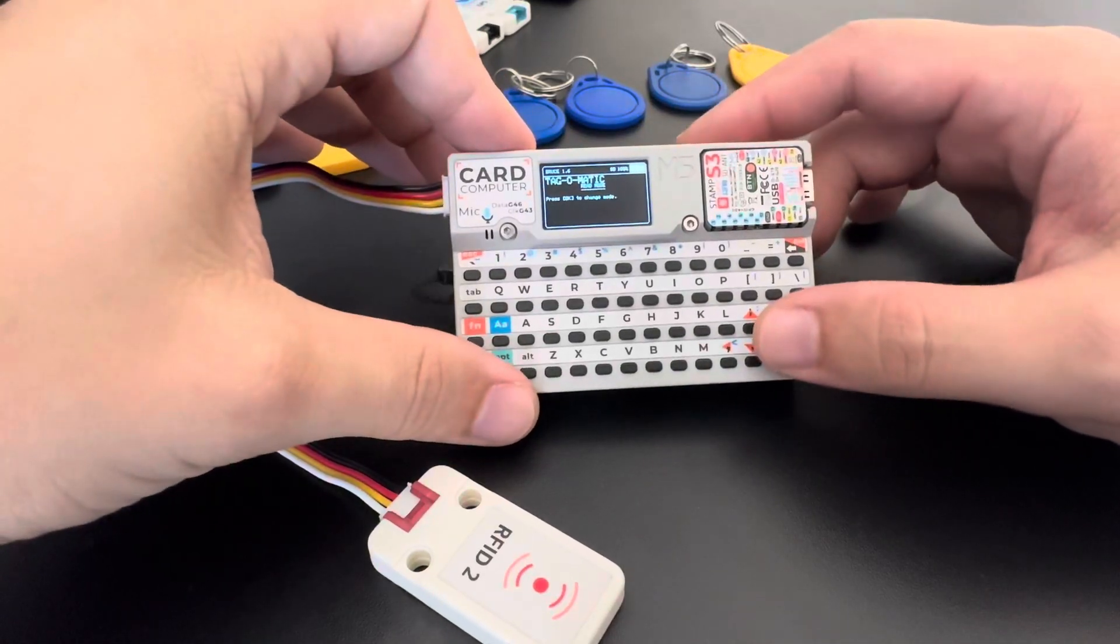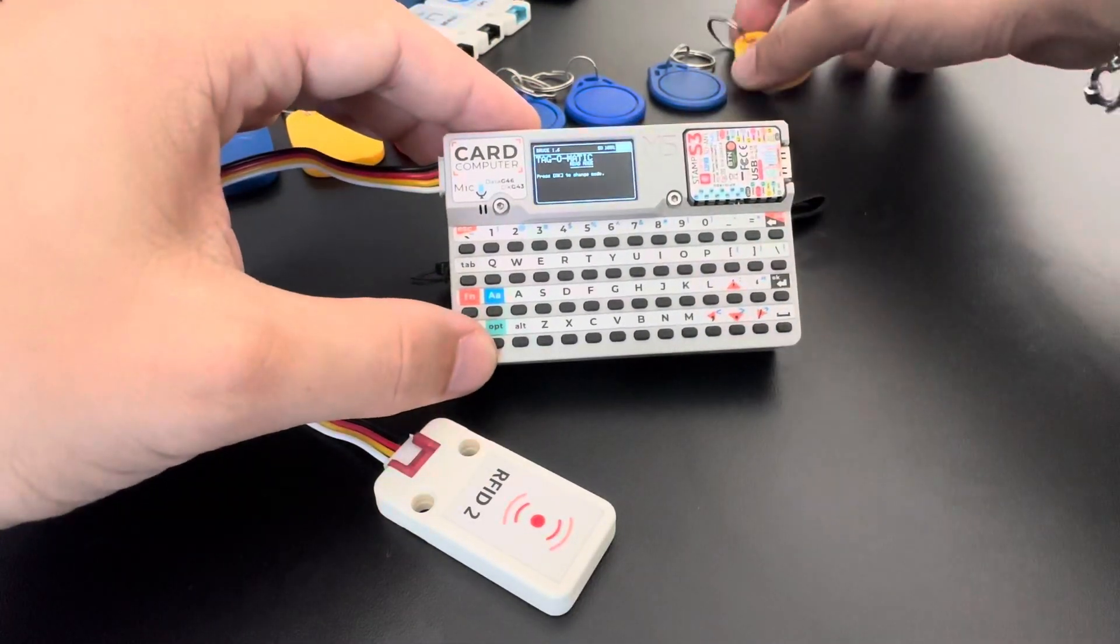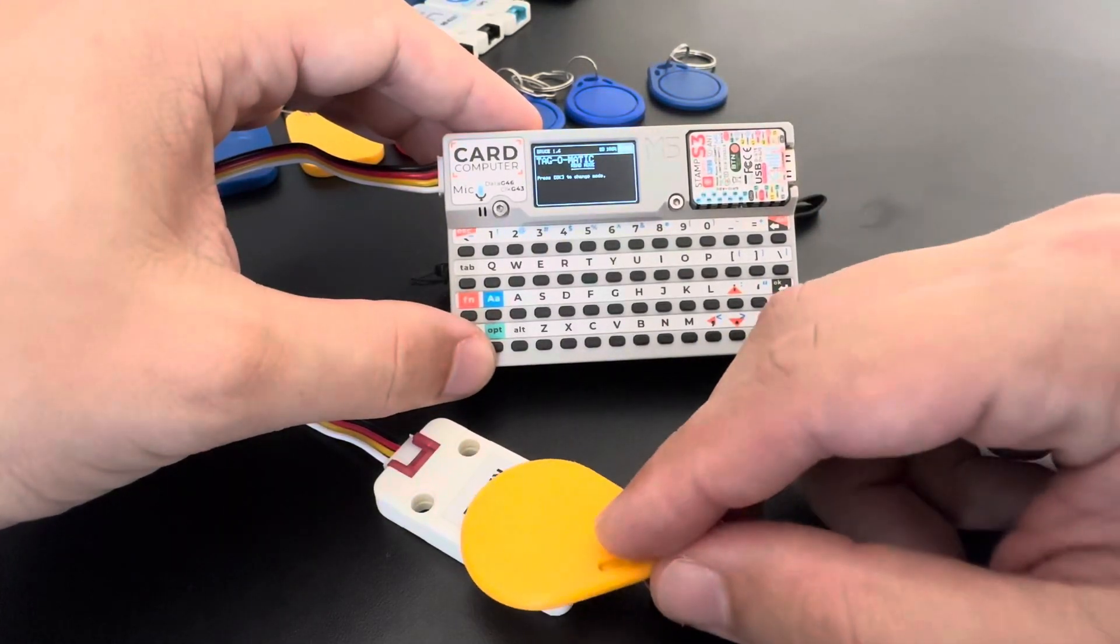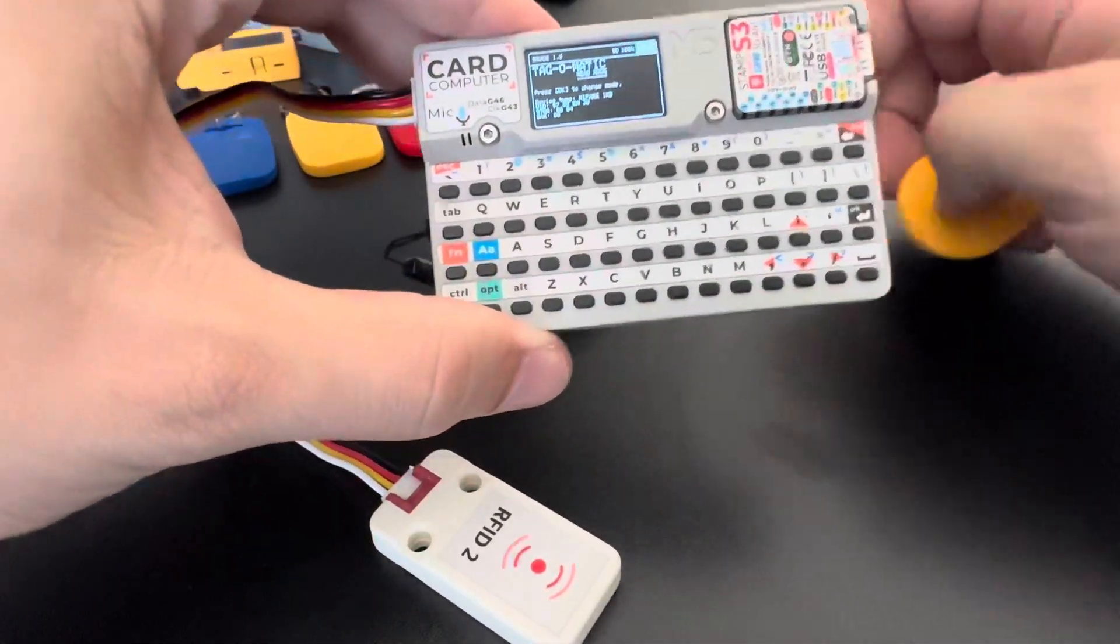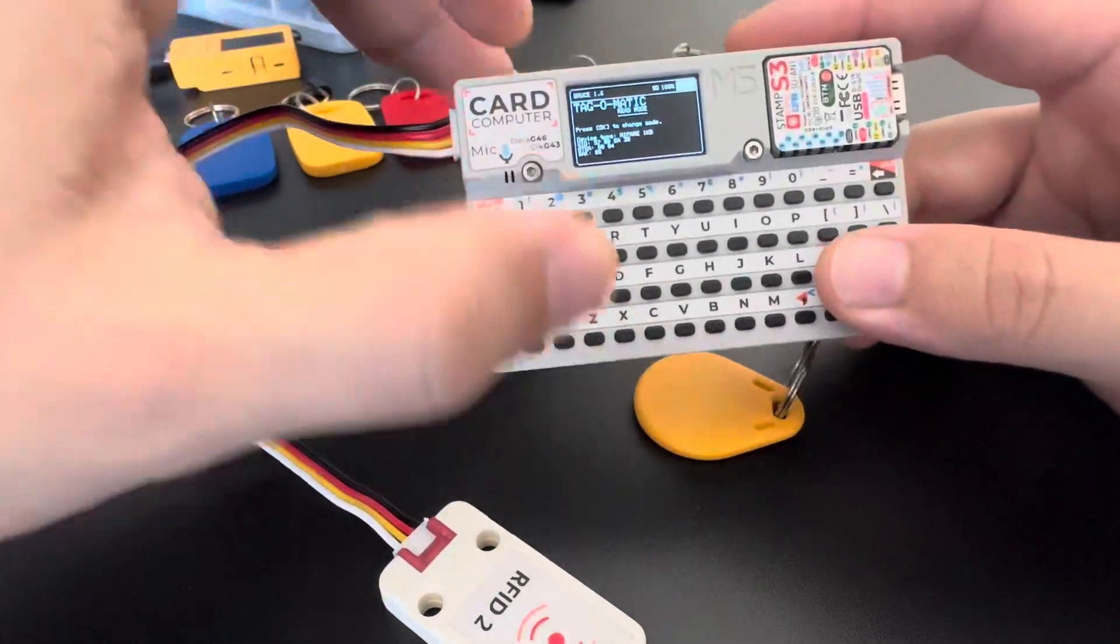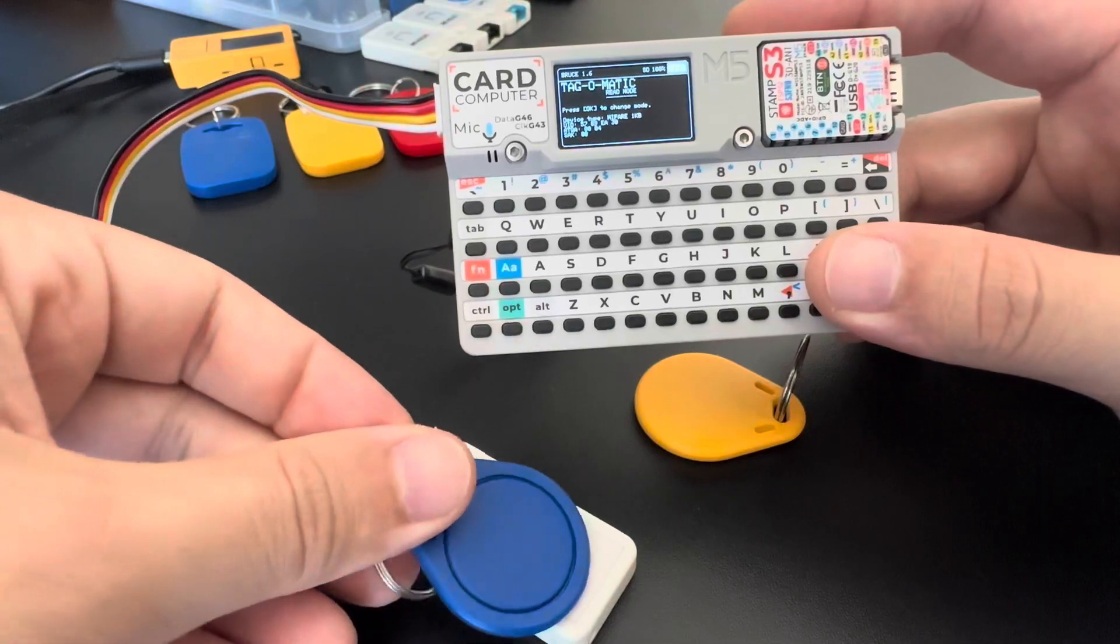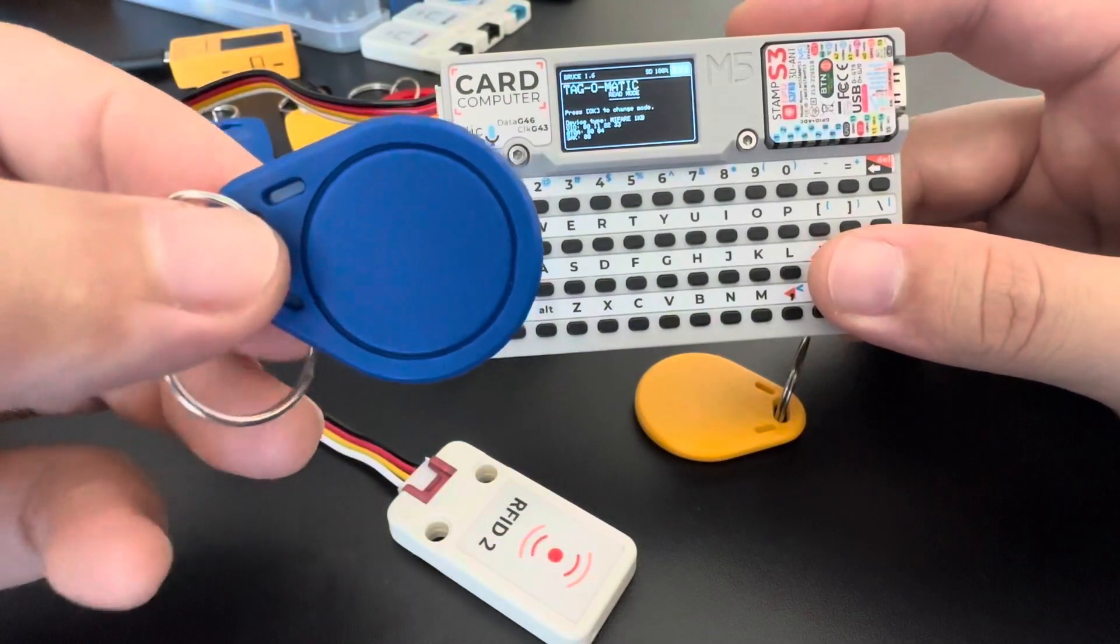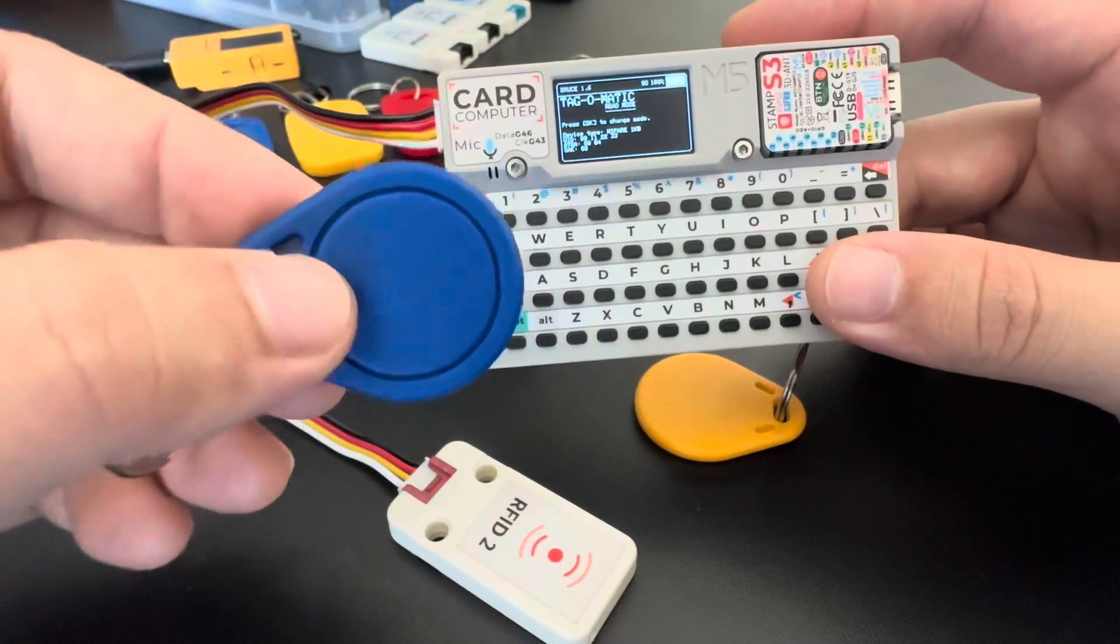What is the difference between reading a tag and scanning tags? Let me take one here. While reading a tag, you can only read one tag at a time. For example, here I just read this one, and if I want to take another one and read it, it will overwrite the data.